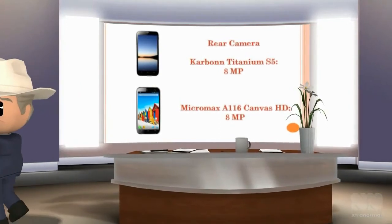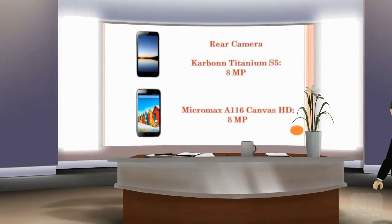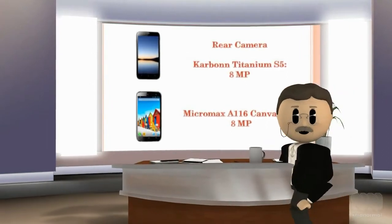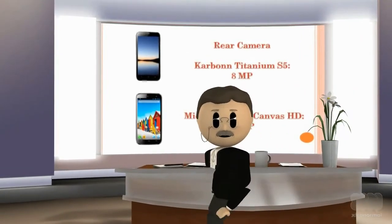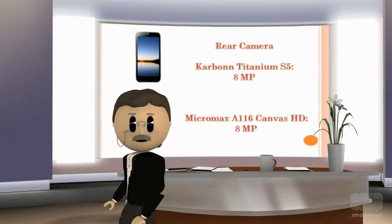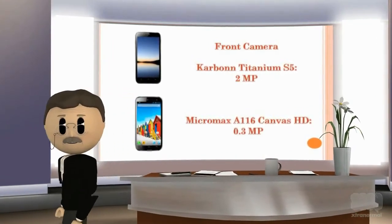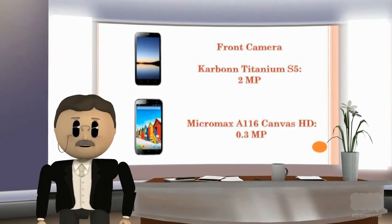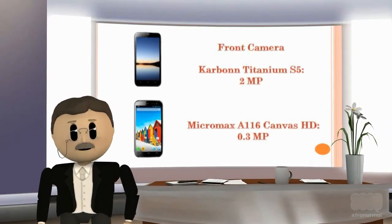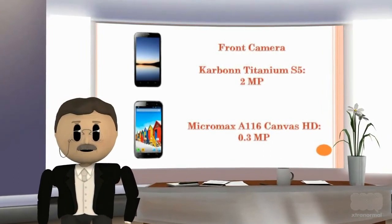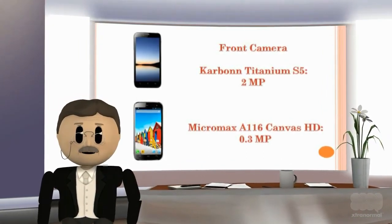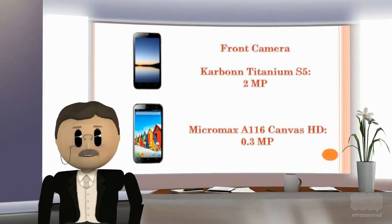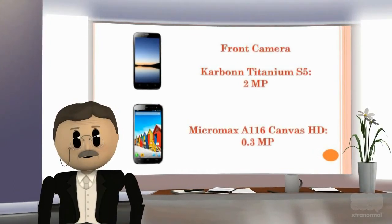Rear camera of Carbon Titanium S5 is 8 MP and rear camera of Micromax A116 Canvas HD is 8 MP. Front camera of Carbon Titanium S5 is 2 MP and front camera of Micromax A116 Canvas HD is 0.3 MP.